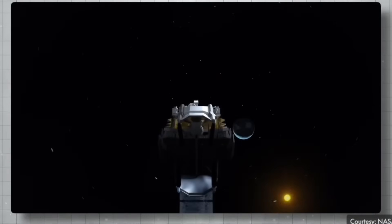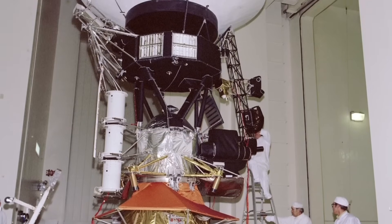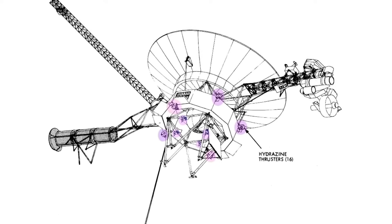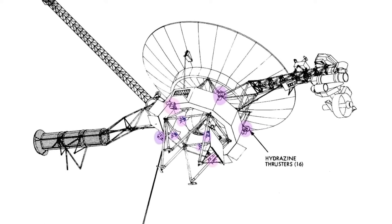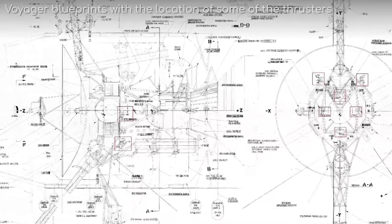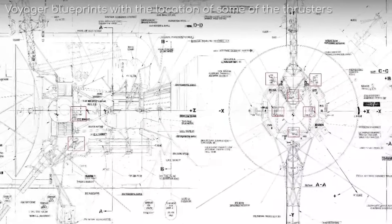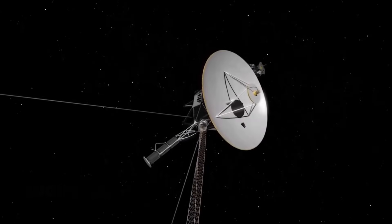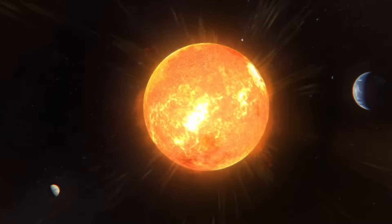To understand why this image matters, let's rewind to Voyager 1's historic launch in 1977. Intended to explore the outer planets, Voyager has outlived every expectation. After Titan, Saturn, Uranus, Neptune, each flyby rewriting textbooks, it continued toward the edge of the Sun's influence. In August 2012, it officially crossed into interstellar space, becoming humanity's first emissary beyond the heliosphere.